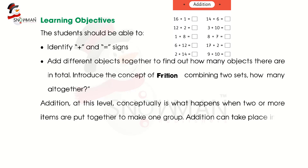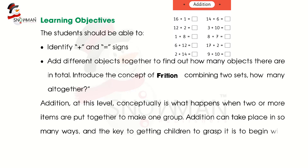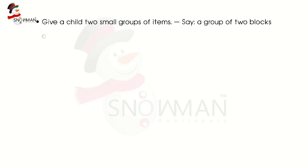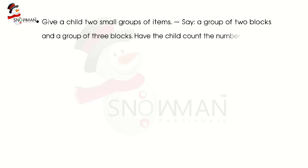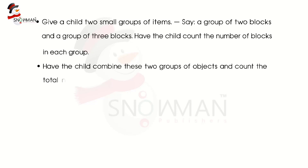Addition can take place in so many ways, and the key to getting children to grasp it is to begin with simple activities of putting together identical items. Give a child two small groups of items — say a group of two blocks and a group of three blocks. Have the child count the number of blocks in each group, then have the child combine the two groups and count the total.